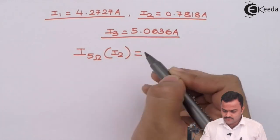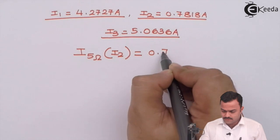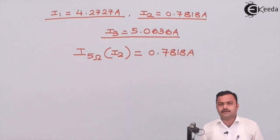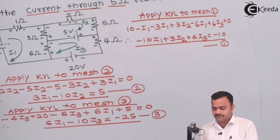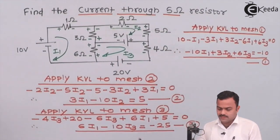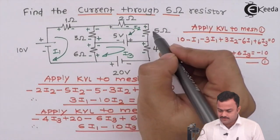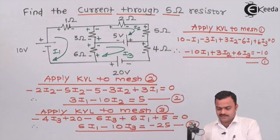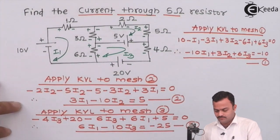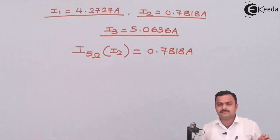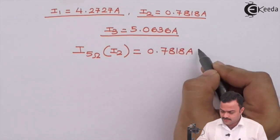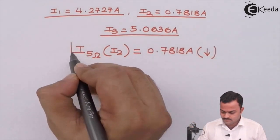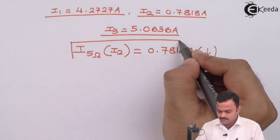i2 is 0.718 amperes. Since the answer is positive, the current direction we marked is correct. For the 5 ohm resistor, i2 is flowing downward. Therefore, the current flowing through the 5 ohm resistor is 0.718 amperes downward. This is our complete answer.